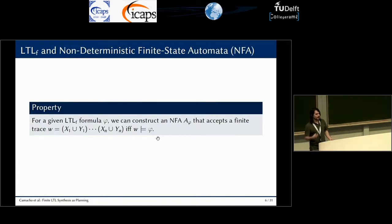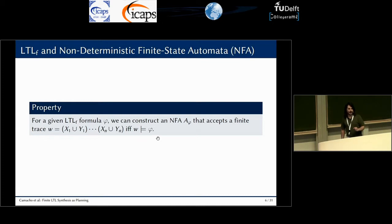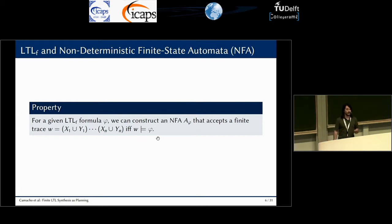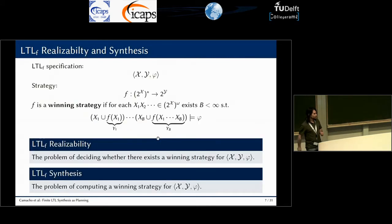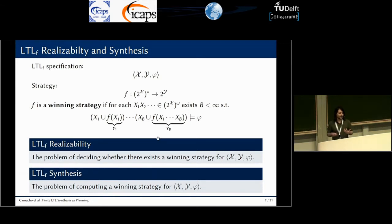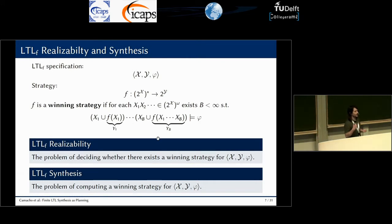In the rest of the presentation, we will exploit this property: for a given LTLf formula phi, we can construct a non-deterministic finite state automaton that accepts a finite trace if and only if the finite trace satisfies the LTLf formula. Now we are ready to introduce our problem. An LTLf specification is a triplet of environment variables X, agent variables Y, and an LTLf formula.